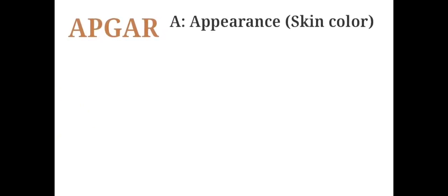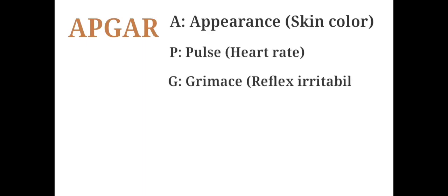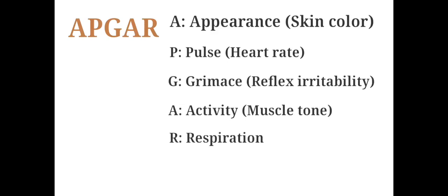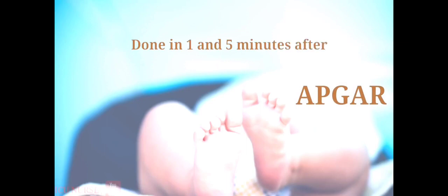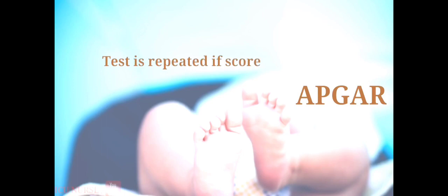APGAR stands for: A. Appearance (skin color), P. Pulse, G. Grimace, A. Activity, R. Respiration. The APGAR test is generally done on a newborn child at 1 and 5 minutes after birth, and may be repeated later if the score is and remains low.